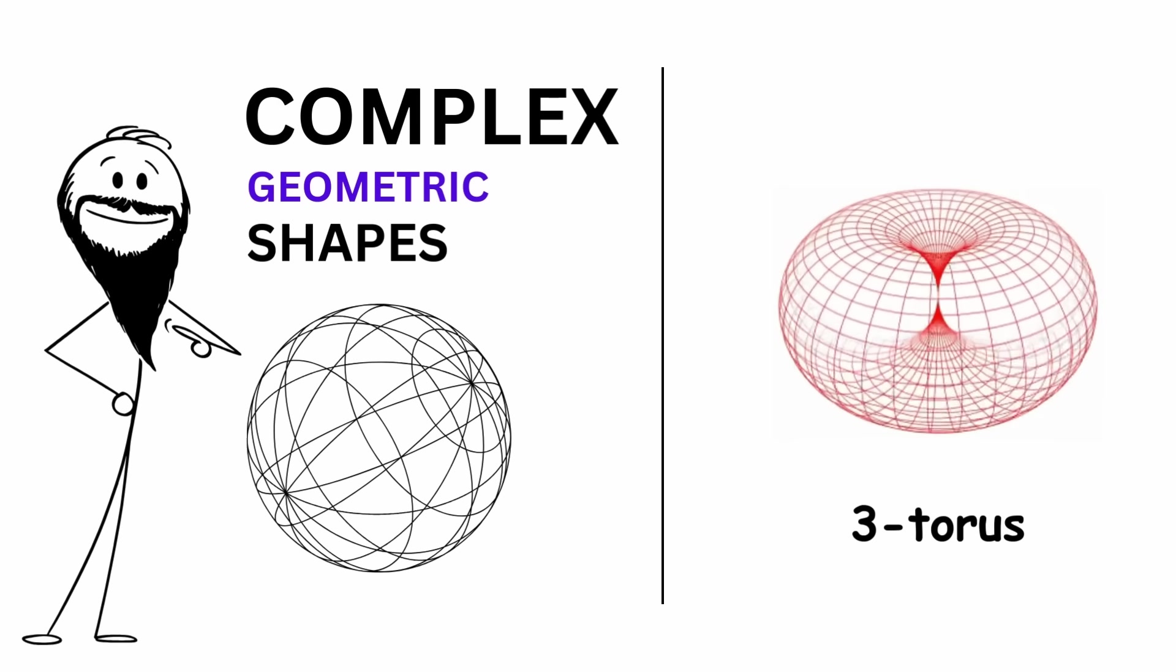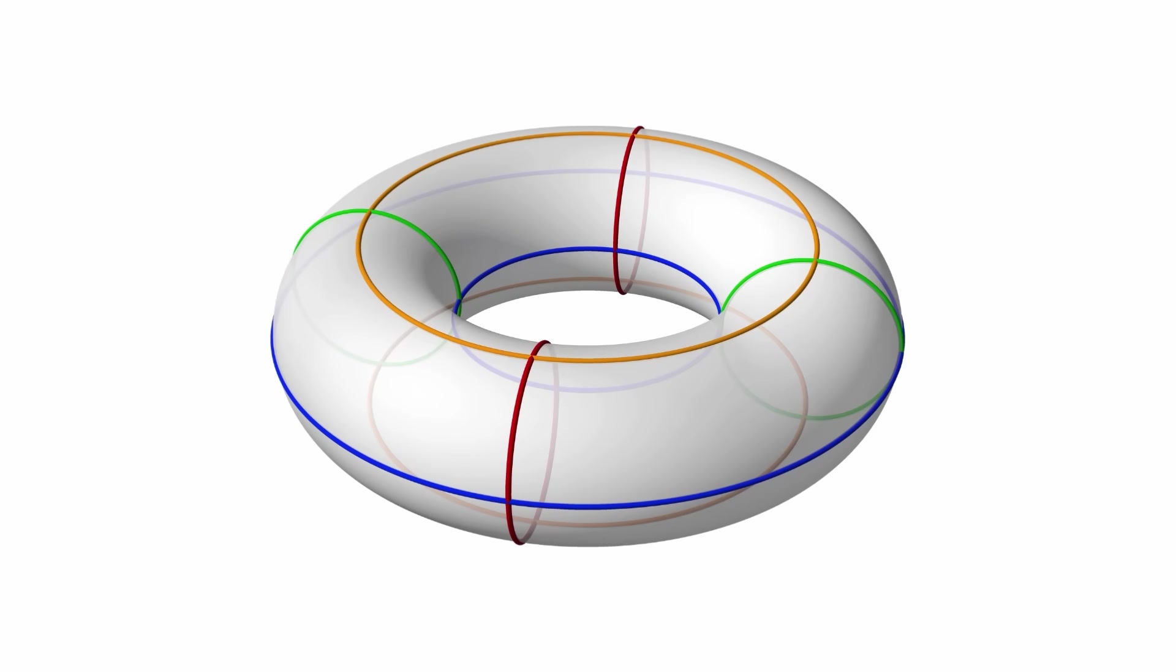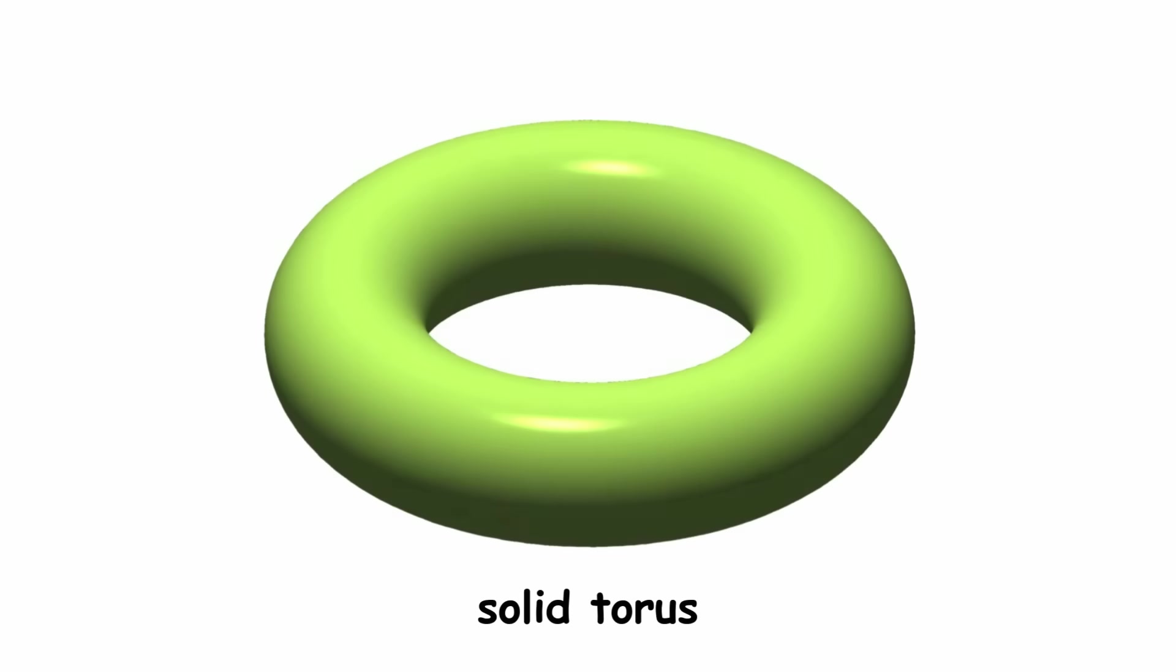Three Torus. A torus is simple. It's just a donut shape. Note that the torus is hollow. If the inside is included, it's called a solid torus instead.